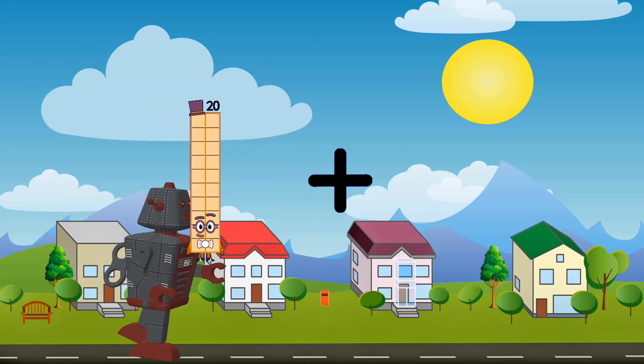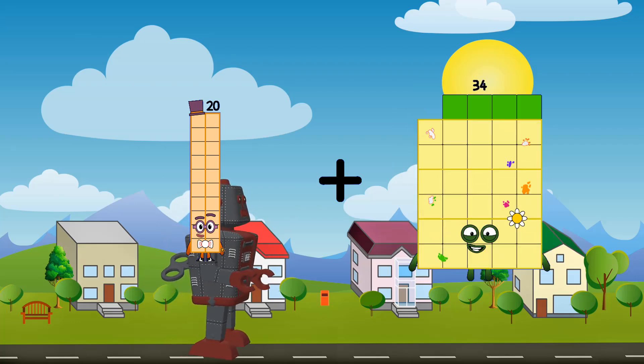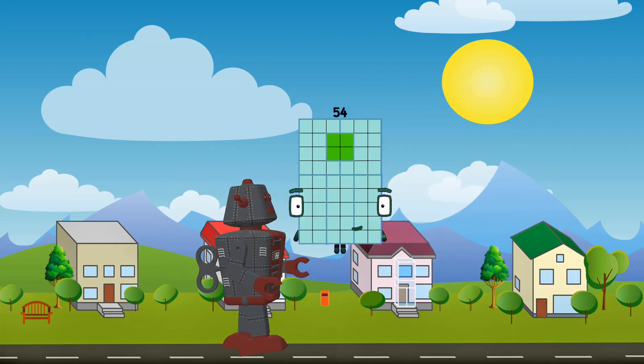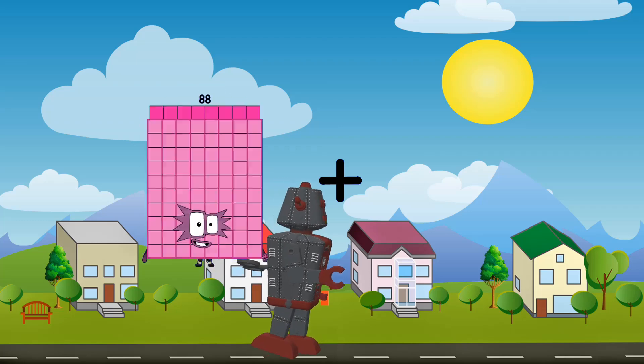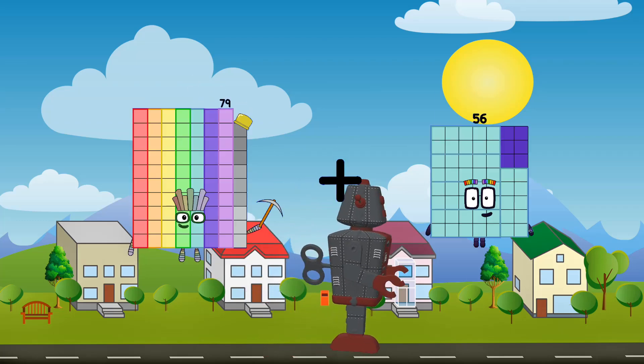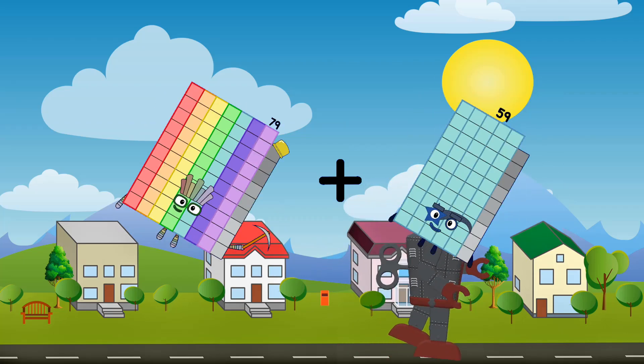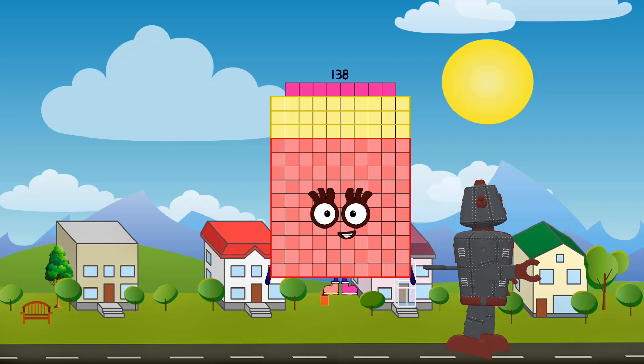20 plus 34 equals 54. 79 plus 59 equals 138.